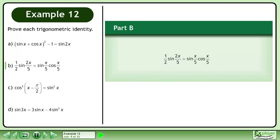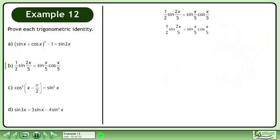In Part B, prove that sin(2x/5) = sin(x/5) times cos(x/5). Rewrite the statement and draw a line.